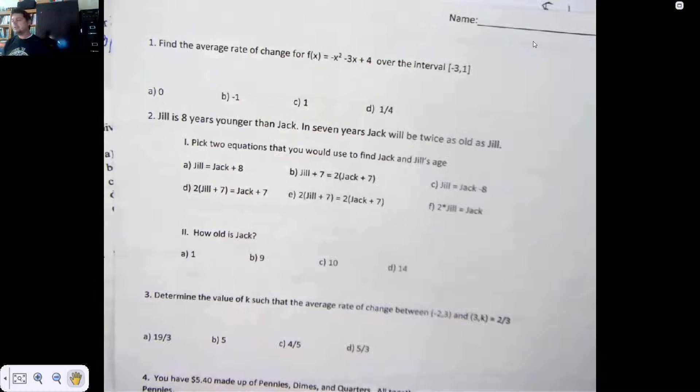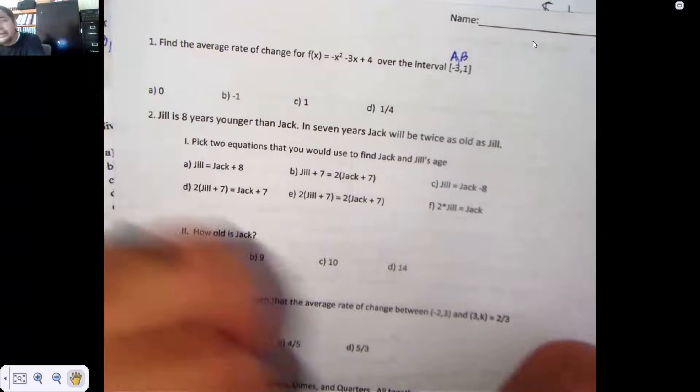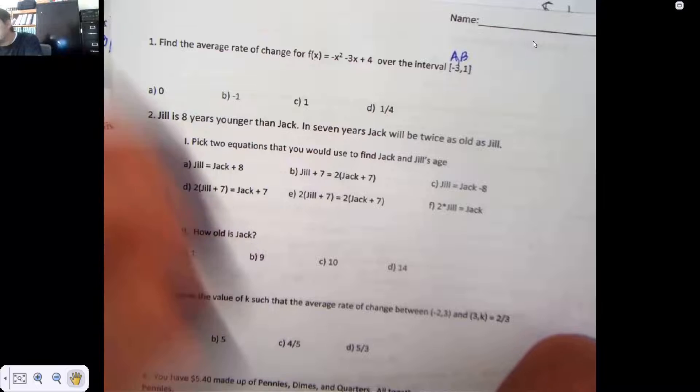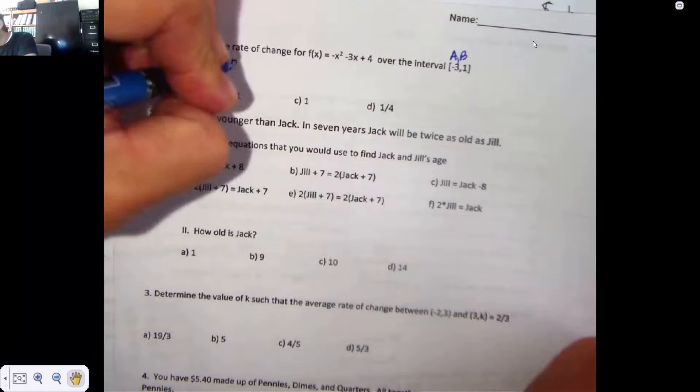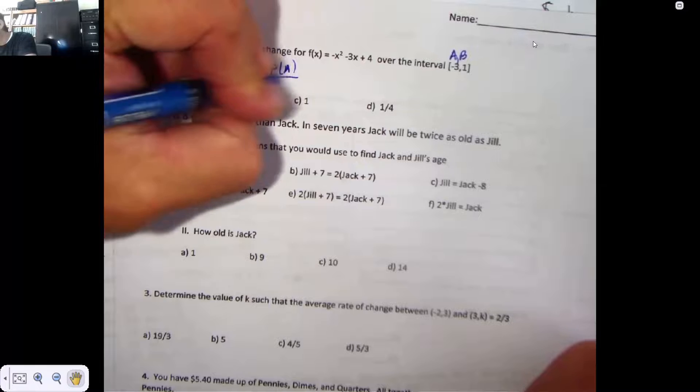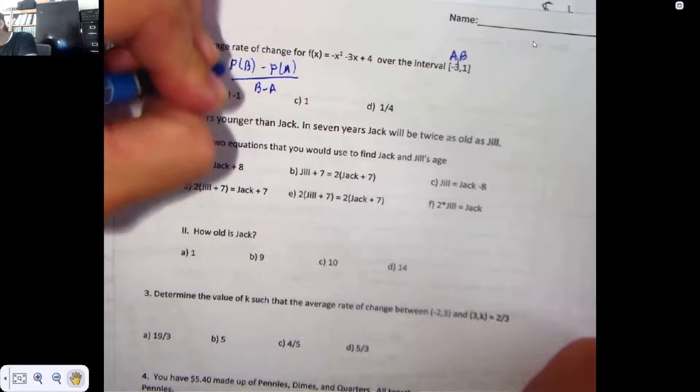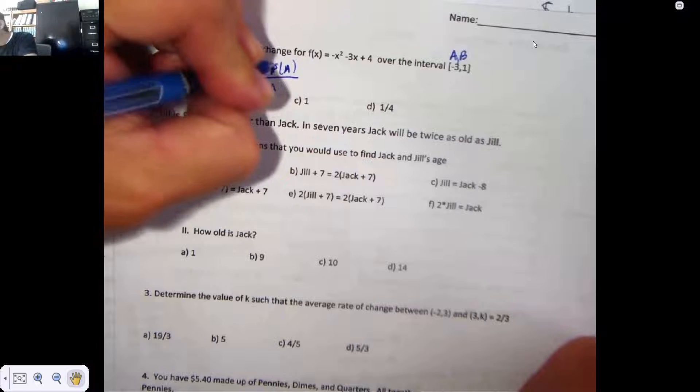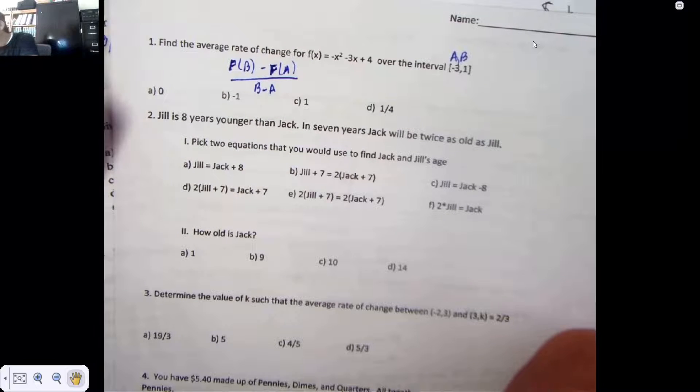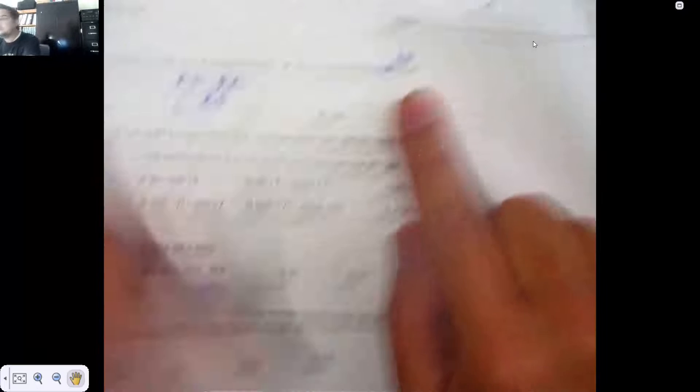Find the average rate of change for f(x) = -x² - 3x + 4 over the interval -3 to 1. I'm going to go ahead and take a half a second of my life and label that A and B. The formula is f(B) - f(A) over B - A. Those are f's, believe it or not. Some of you guys watch videos muted. You don't need to be doing that. So, off to the side, I need to figure out what these two pieces are.